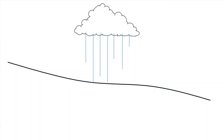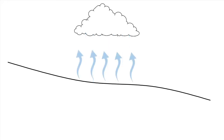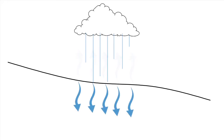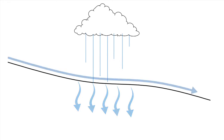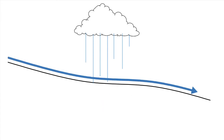Generally speaking, precipitation that reaches the Earth's surface will rapidly move in one of three directions. It may evaporate back into the atmosphere, it may infiltrate or seep down into the soil and eventually become groundwater, or it may move along the land as surface runoff until it reaches a river, lake, wetland, or other basin.